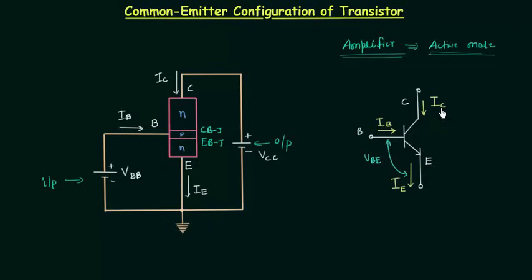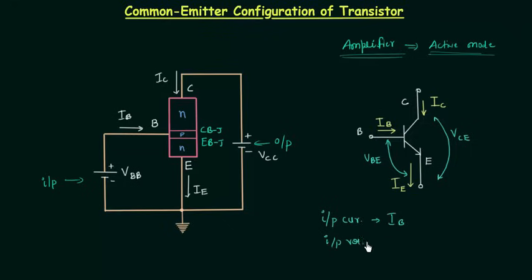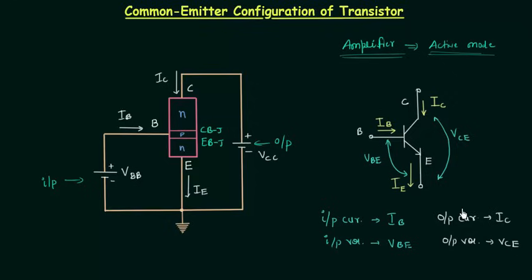The output current is IC and the output voltage is VCE. To summarize: the input current is IB, the input voltage is VBE, the output current is IC, and the output voltage is VCE.